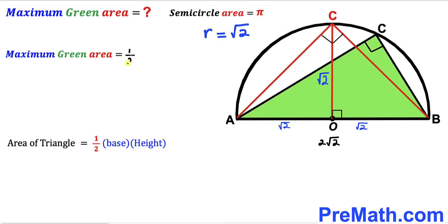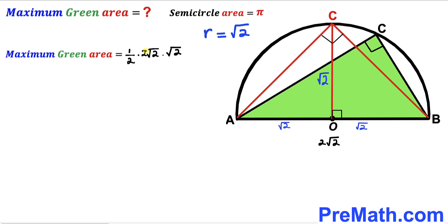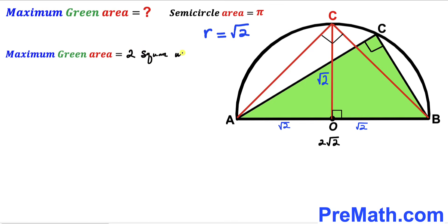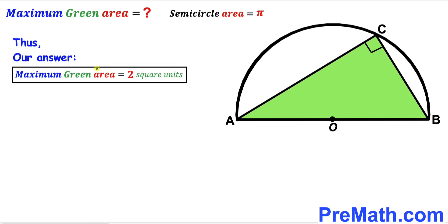Therefore the maximum green triangle area equals one half times base (2 times square root of 2) times height (square root of 2). The 2 and one-half cancel, and square root of 2 times square root of 2 equals 2. So the maximum possible area of this green triangle is 2 square units. Thanks for watching, and please don't forget to subscribe to my channel for more exciting videos. Bye!